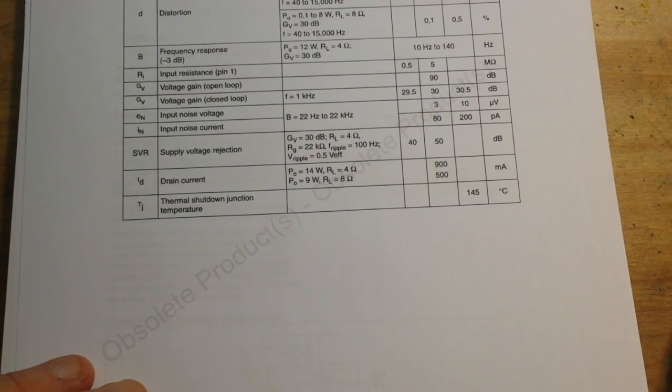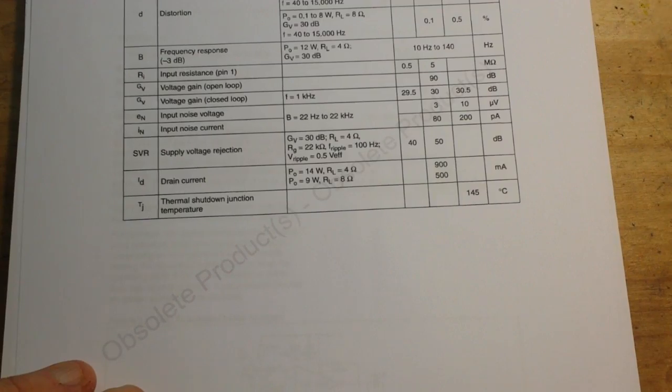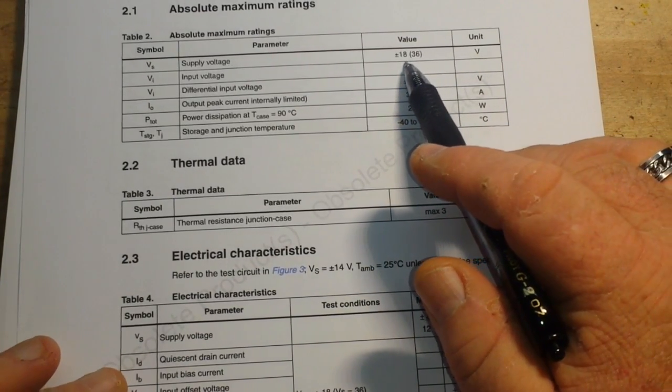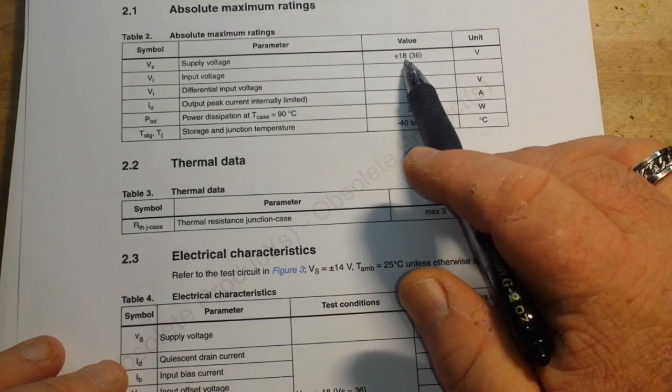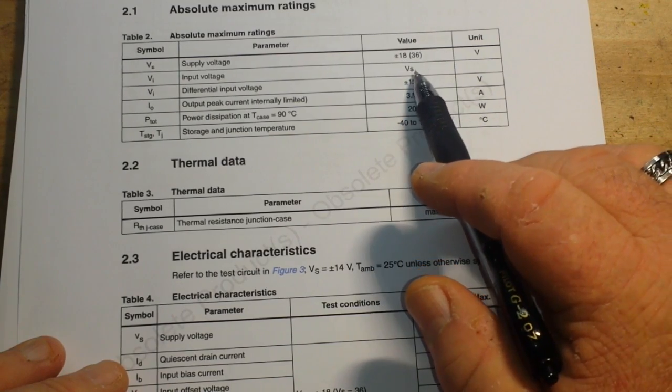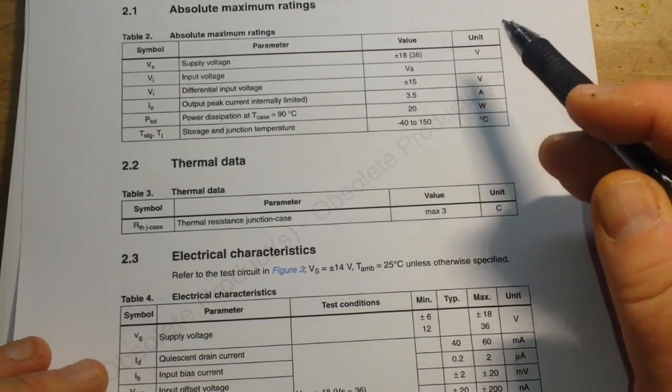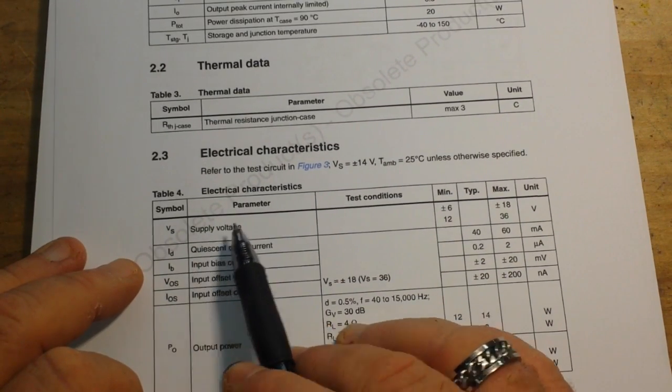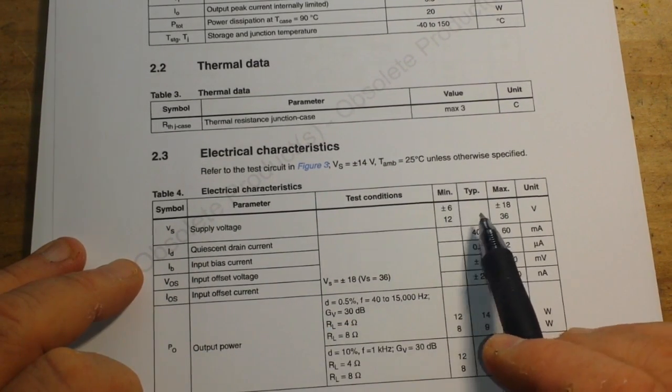Here are some of its electrical characteristics. So supply voltage of plus or minus 18 or 36 volts, input voltage... So we come down here and we talk about our supply voltage minimum six.